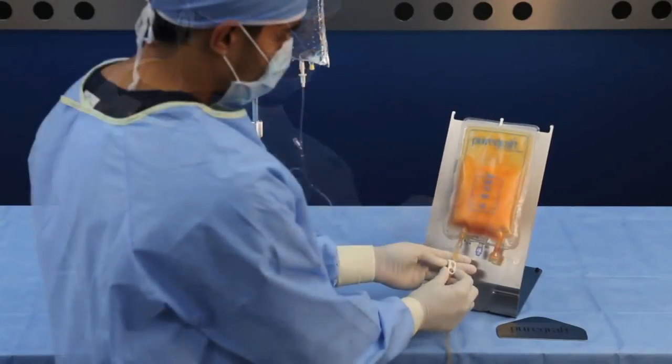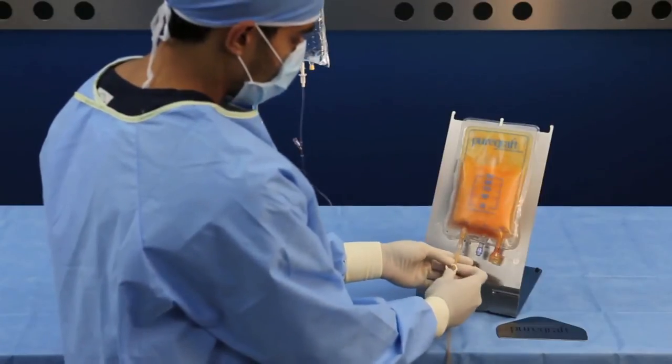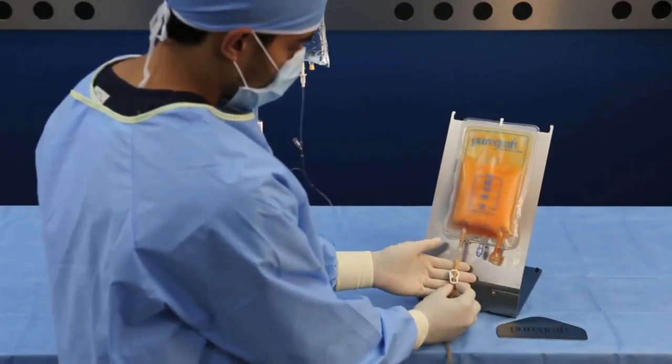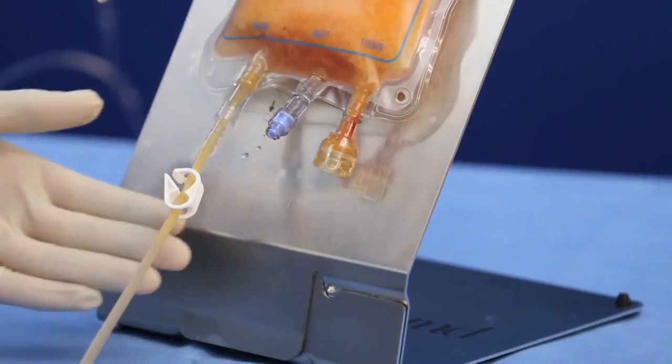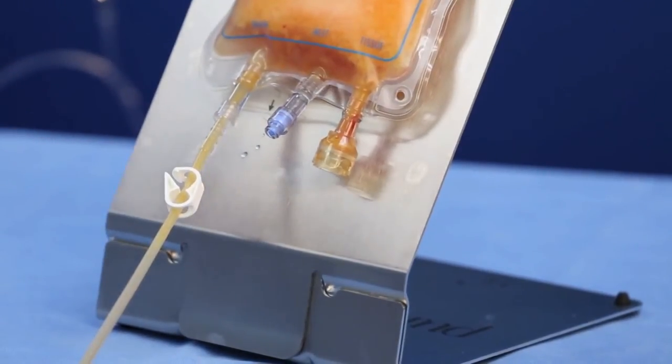Then open the clamp to the drain bag and drain excess rinse solution for approximately three minutes, depending on the preferred graft hydration level.